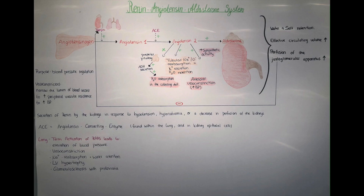The goal of the renin-angiotensin-aldosterone system is to regulate blood pressure in response to signals within the body. These signals can indicate hypotension, hyponatremia, or a decrease in perfusion of the kidney — essentially signaling that there is low blood pressure, not enough sodium in the blood, or that the kidney is not receiving adequate blood supply.